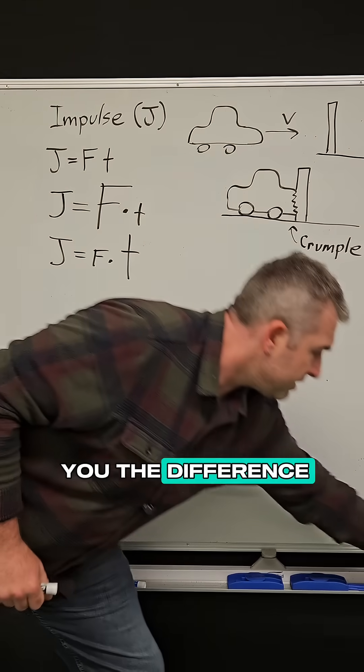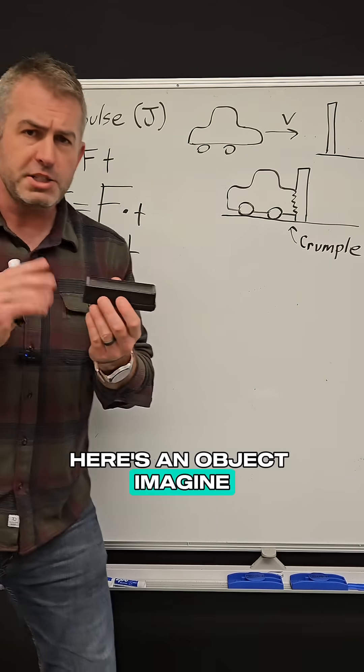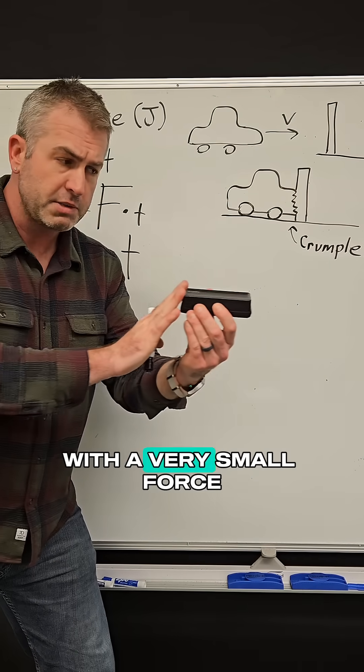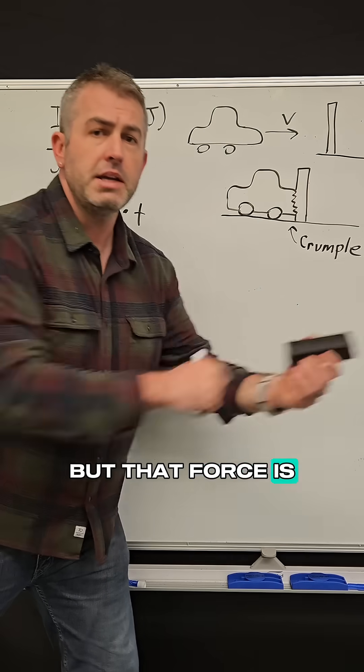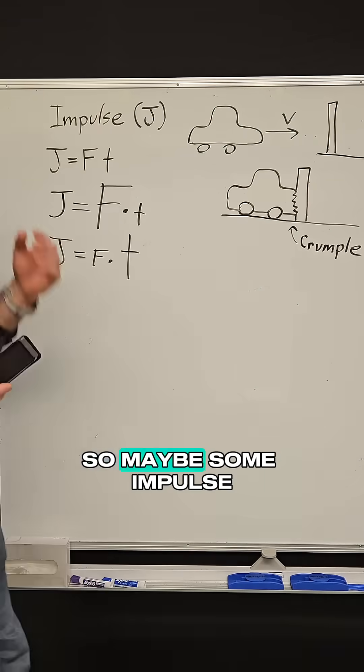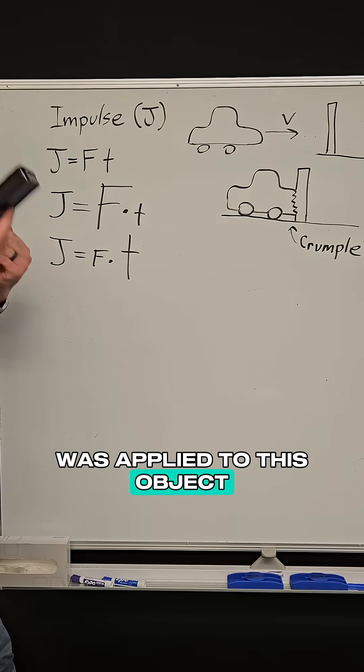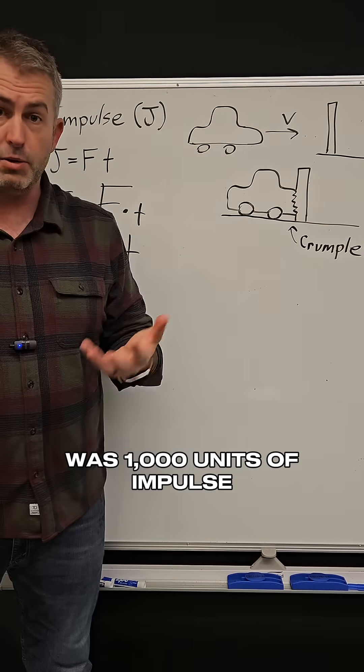So let me show you the difference. Here's an object - imagine pushing this across the desk with a very small force, but that force is being applied for a very long time. So maybe some impulse was applied to this object, and let's say that was a thousand units of impulse.